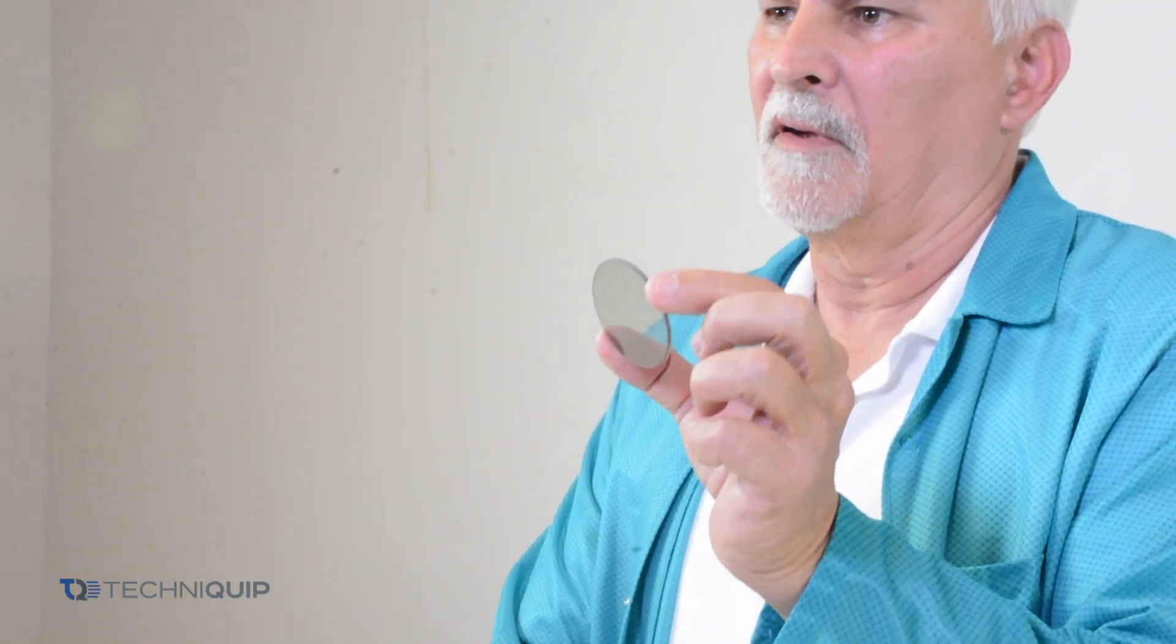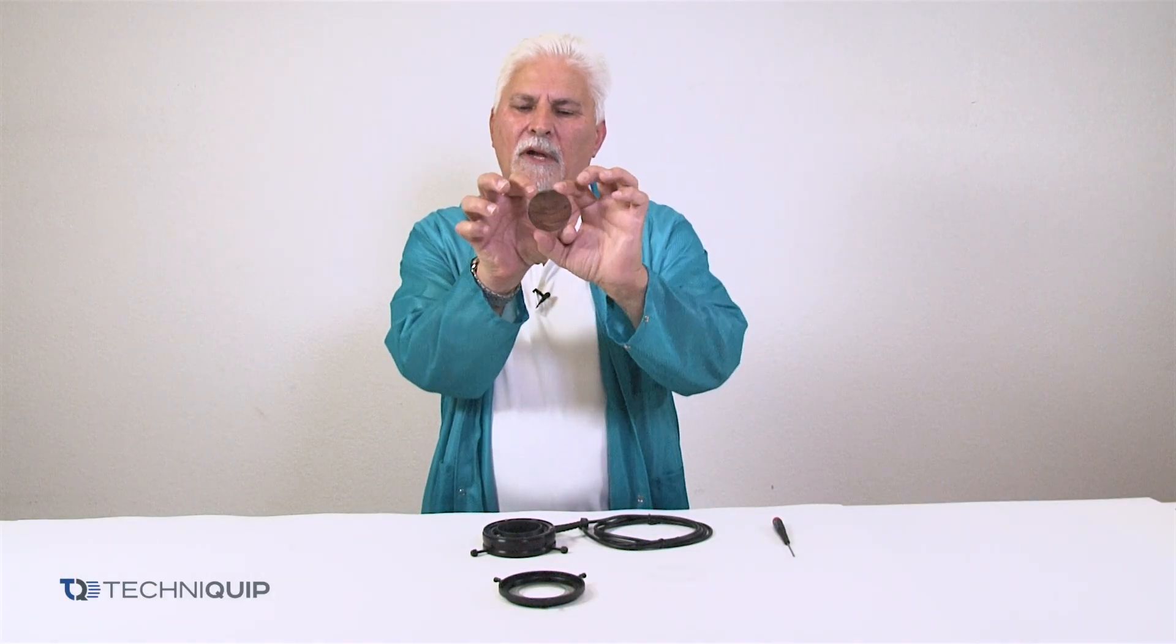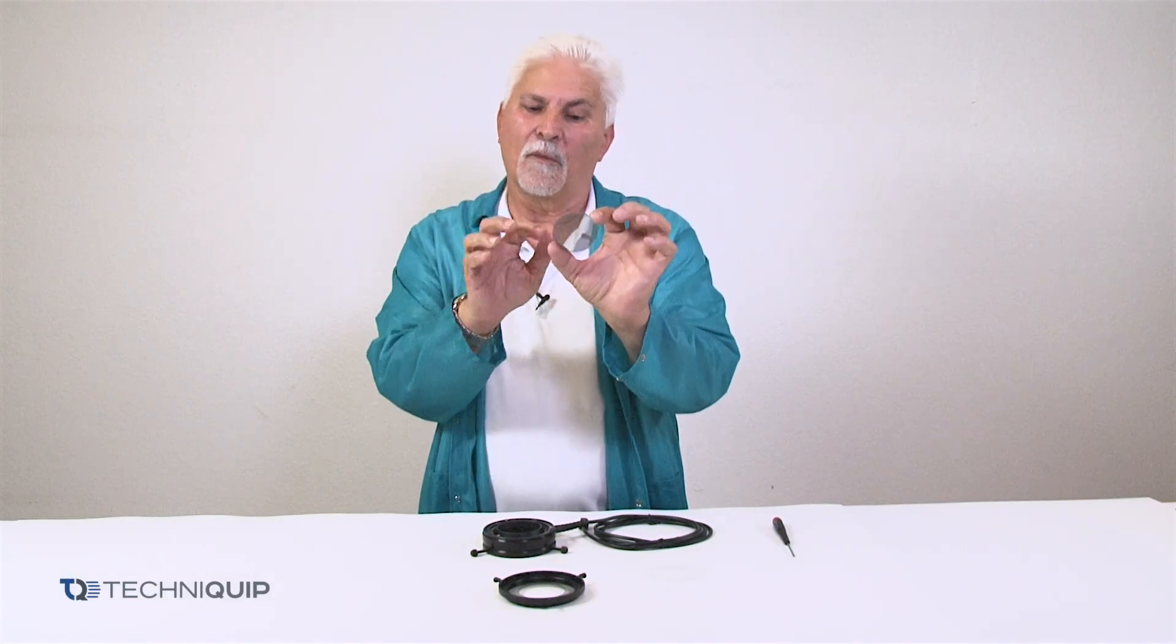The next step in the polarization kit installation is to install the polarizer lens itself. Now, the polarizer lens is very important. You want to make sure that you do not handle it anywhere but along the edges. You do not want fingerprints.